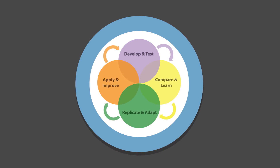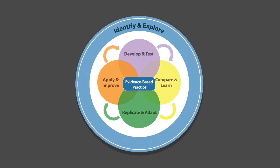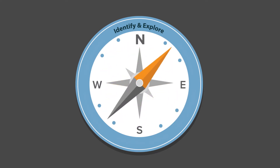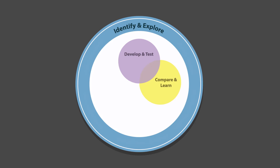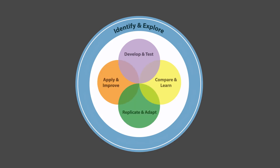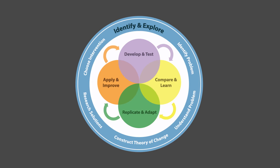Each phase of this framework consists of distinct steps, and together its five phases form a complete process for building and spreading effective practice. The framework begins with an expectation to identify and explore before moving on to one or more of the other phases: develop and test, compare and learn, replicate and adapt, and apply and improve — sequential and cyclical phases that follow identify and explore and build on one another to support the implementation of evidence-based practice.